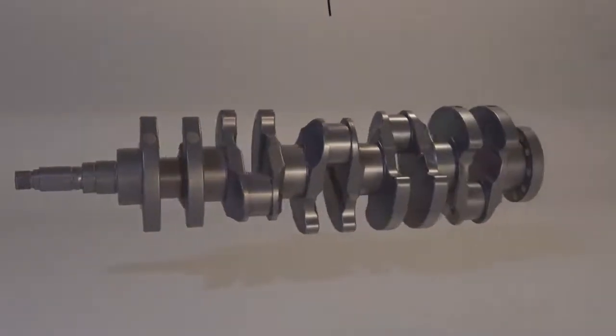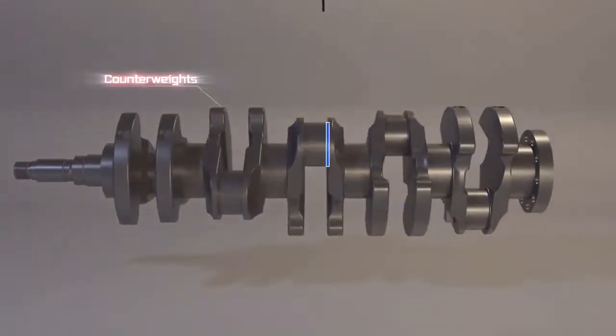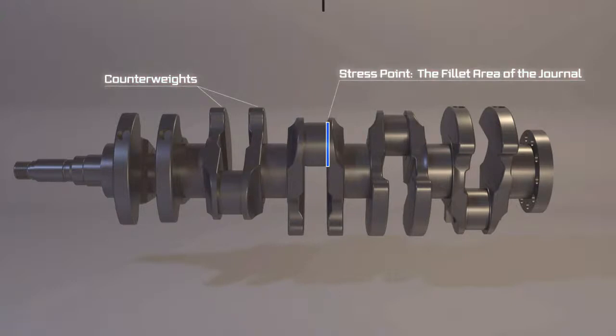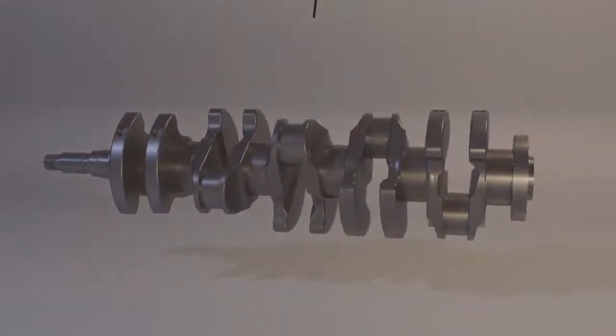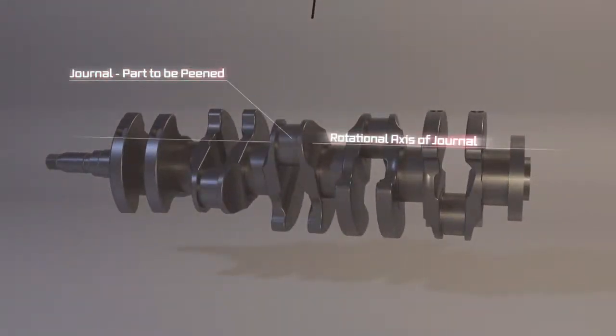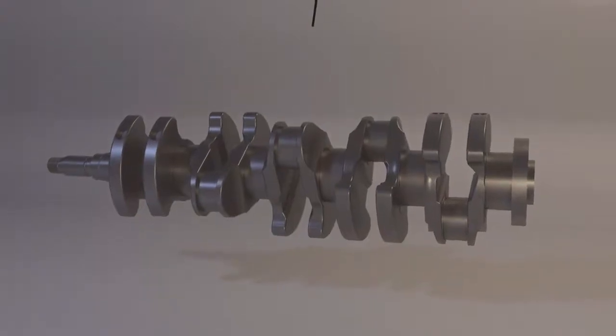and breakdowns in a key engine part: the crankshaft. Mounted on the robot, the part is in position and it will rotate on the axis of the journal to receive laser peening treatment. The laser will strike at the stress points we identified.